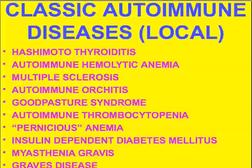Let's talk about the classic local autoimmune diseases: Hashimoto's thyroiditis, autoimmune hemolytic anemia, multiple sclerosis, autoimmune orchitis, Goodpasture syndrome, autoimmune thrombocytopenia, pernicious anemia, insulin-dependent diabetes mellitus, myasthenia gravis, and Graves disease. In every single case, these are regarded as relatively local diseases, where we have an antibody attacking a known antigen — or sometimes an almost-known antigen — in a regional area of the body.